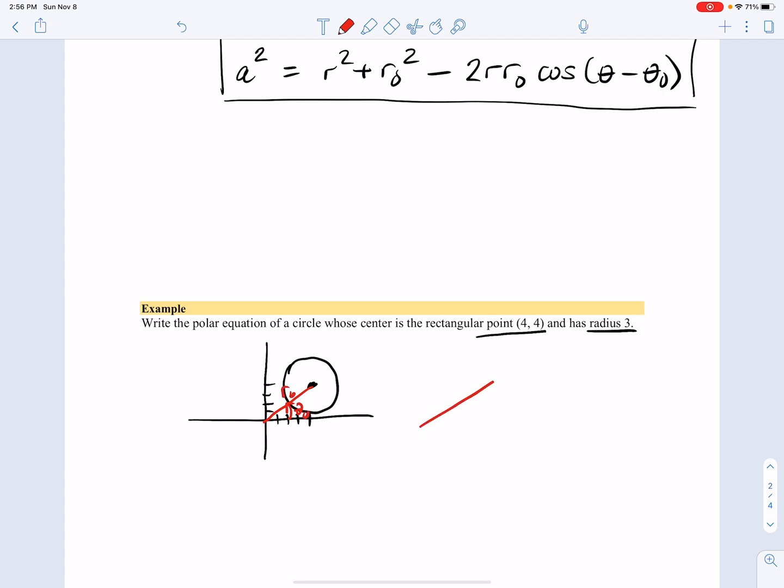So I need to label what r zero is and what theta zero is. r zero is the distance from (0, 0) to (4, 4). And theta zero is the angle that corresponds to that. Well, no problem. r zero is just the square root of four squared plus four squared, which you could say is four root two.